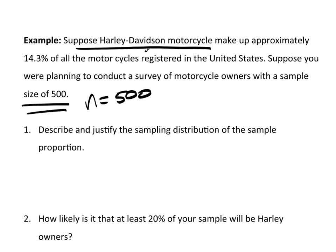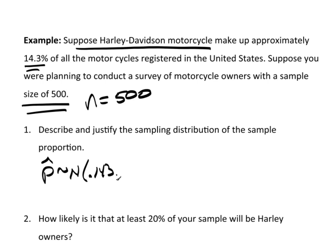If we know that Harley-Davidson Motorcycle sales make up 14.3%, that's pi. So our sample proportion p̂ would be distributed normal with a mean equal to pi, which is 0.143. And the variance would be 0.143 times 1 minus 0.143, divided by N, which is 500.